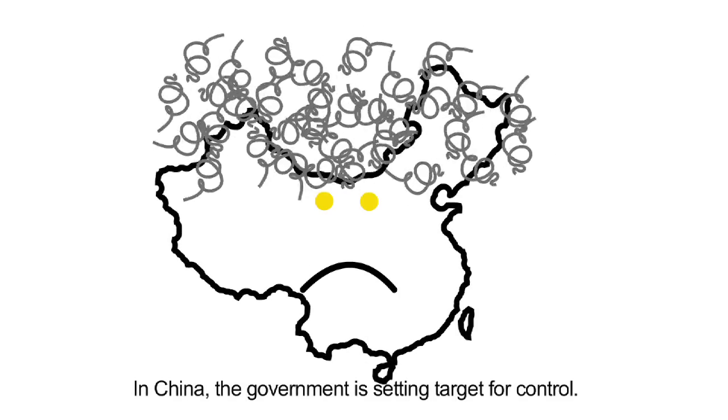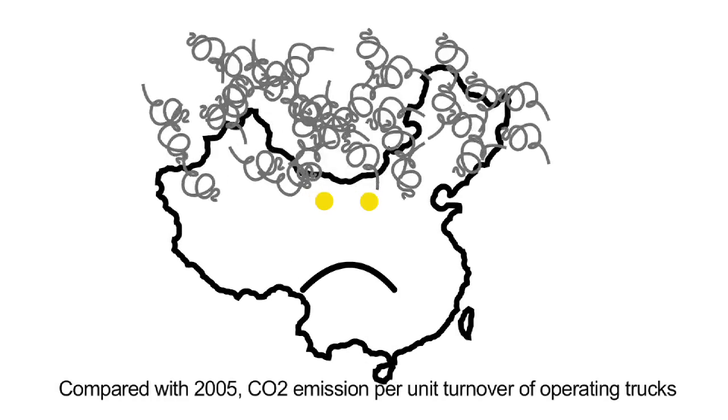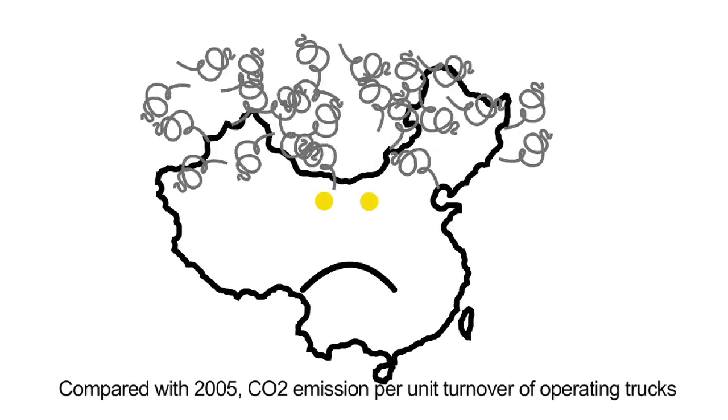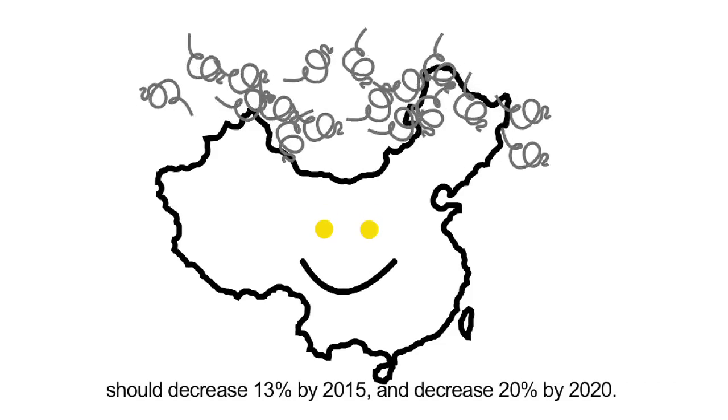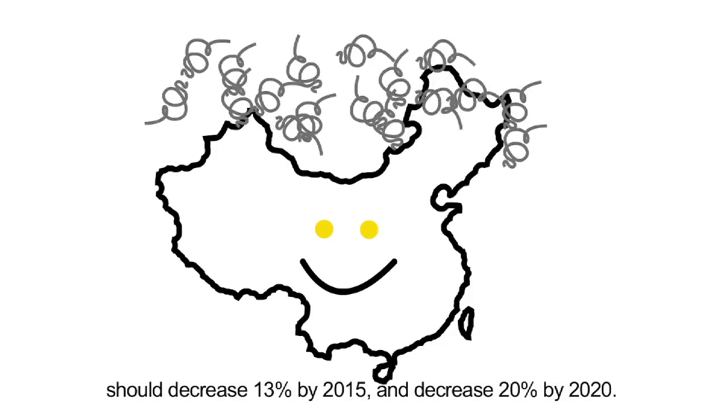In China, the government is setting targets for control. Compared with 2005, CO2 emissions per unit turnover of operating trucks should decrease 13% by 2015 and decrease 20% by 2020.